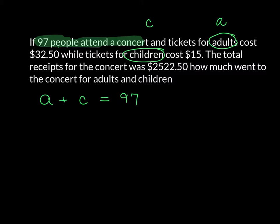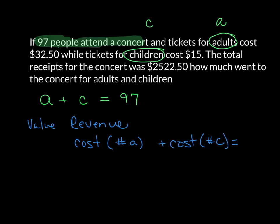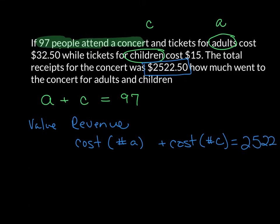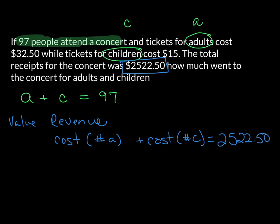Now, the next statement I need is the value or the revenue. And the way we get this is by taking the cost of the ticket times the number of adults, and then plus the cost of the ticket times the number of children, and that is equal to the total that the concert took in, which in this case was $2,522.50.